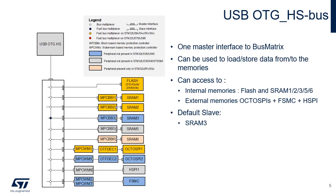This bus connects the OTG-HS master interface to the bus matrix, and is used by the OTG-HS to load and store data from and to the memory. This bus targets the data memories including internal flash memory, internal SRAMs (SRAM1, SRAM2, SRAM3, SRAM5 and SRAM6) and external memories through FSMC, HSPI1 or OctoSPIs. Its default slave is SRAM3.